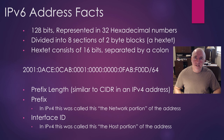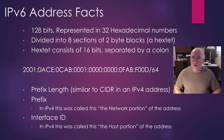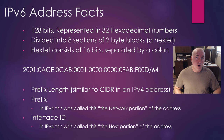IPv6 is a longer number — it's 128 bits long, where IPv4 is 32 bits long. It's four times longer. Remember, if it was only one bit longer, it would be double the size of IPv4. So if we had gone from 32 to 33 bits, it would have doubled the size of IPv4. If we went to 34 bits, it would have doubled again. Remember your binary math — it doubles each time. So we've doubled and doubled 96 times, making it much larger.